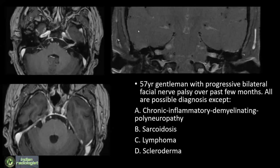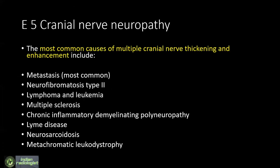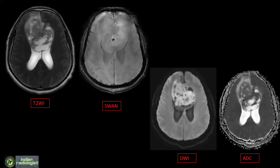What we are seeing on this image is multiple cranial nerves that are thickened and enhancing. The differential for multiple cranial nerve involvement with thickening and enhancement includes metastasis, neurofibromatosis type 2, lymphoma, leukemia, multiple sclerosis, CIDP, Lyme disease, neurosarcoid, and metachromatic leukodystrophy. Commonly seen are lymphoma, neurosarcoid, and metastasis, including paraneoplastic syndromes. Scleroderma will not cause CNS symptoms.